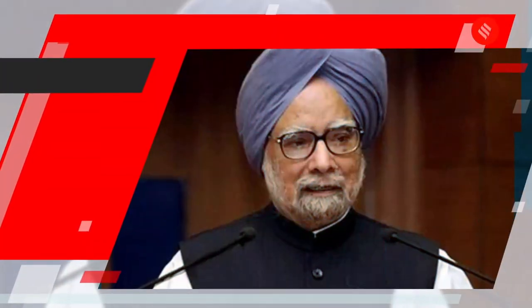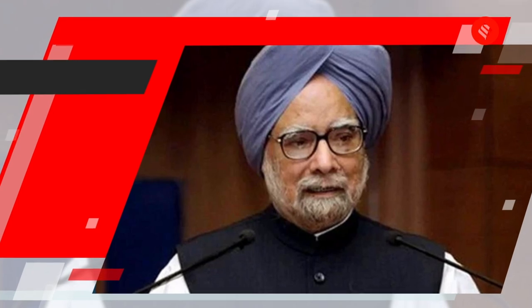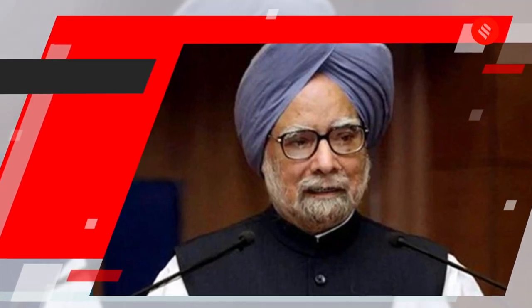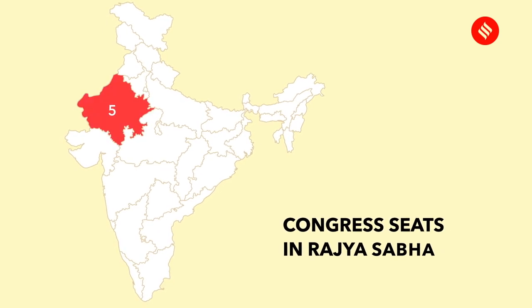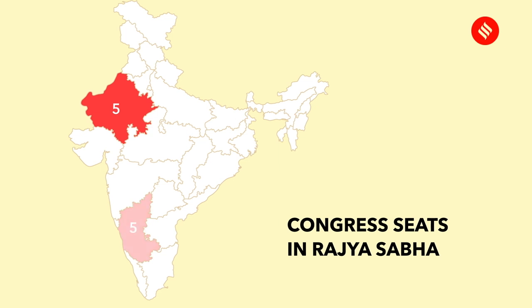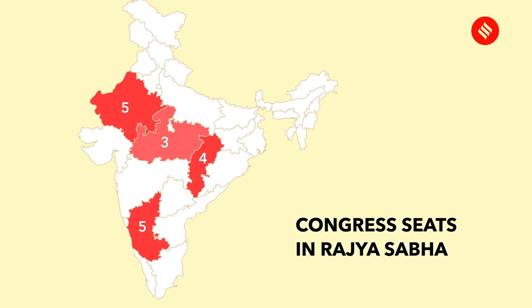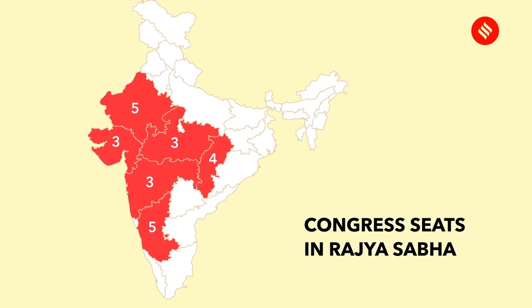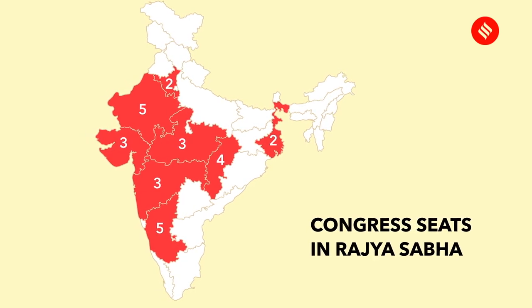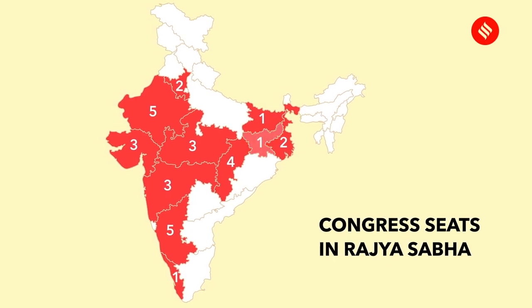Former Prime Minister Manmohan Singh had been an MP from Assam till he moved to Rajasthan in 2019. Of the 30 or 31 seats that the Congress will have after the biennial elections, the party will have 5 members each from Rajasthan and Karnataka, 4 from Chhattisgarh, 3 each from Madhya Pradesh, Maharashtra, and Gujarat, and 2 each from West Bengal and Haryana. It will have 1 member each from Bihar, Kerala, and Jharkhand.